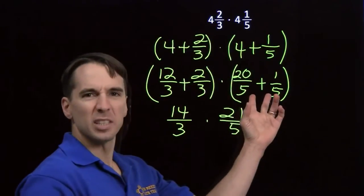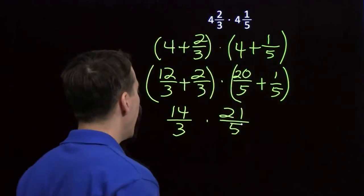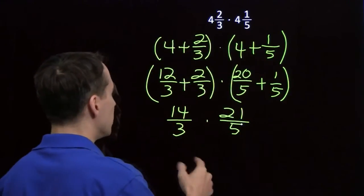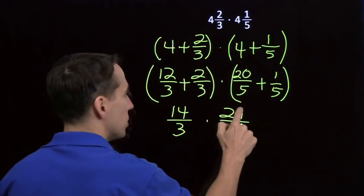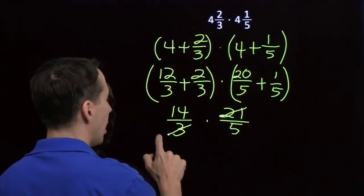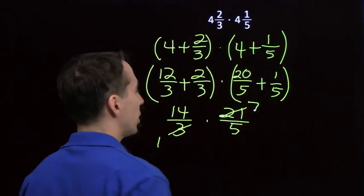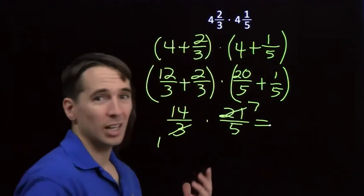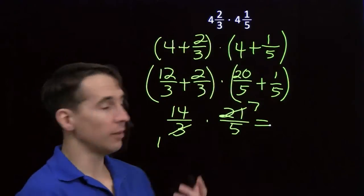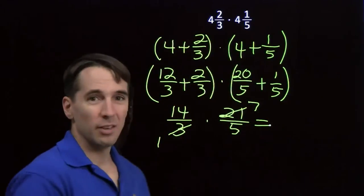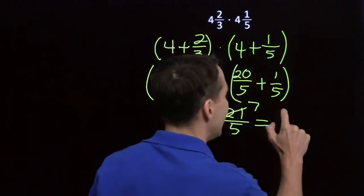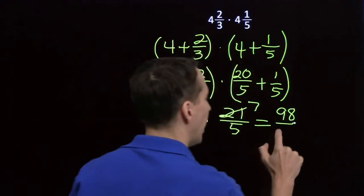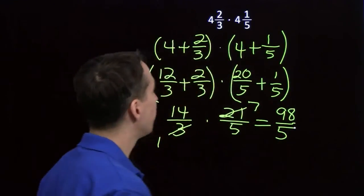I usually skip this step in the middle. I just think it up here in my head. Now, we can multiply fractions. We know how to do this. We can do a little cancellation first. We see the 21 and the 3 have a common factor of 3. Do a little canceling there. So now we have 14 times 7 over 1 times 5. 14 times 7. Well, 14 is 2 times 7. So we go 7 times 7 is 49. Double that, we get a 98. And on the bottom, we have 1 times 5. That gives us 5.